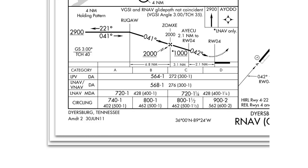Finally, we're going to take a look at a GPS approach. RNAV GPS approaches have many different categories of approach based on what your receiver is capable of receiving, and also what is available in the area in terms of WAAS — wide area augmentation system — which enhances GPS accuracy. This chart happens to have all of the available minimums listed. There's an LPV approach, which is considered the most accurate GPS approach, includes a glide slope, and can be flown to altitudes that are almost always near an ILS precision. Next, you have LNAV/VNAV, which also has a glide slope. However, it's treated much more like a non-precision approach, and the ceiling requirement is just a little bit different on this one.